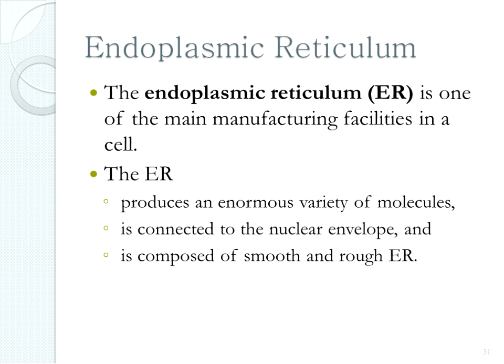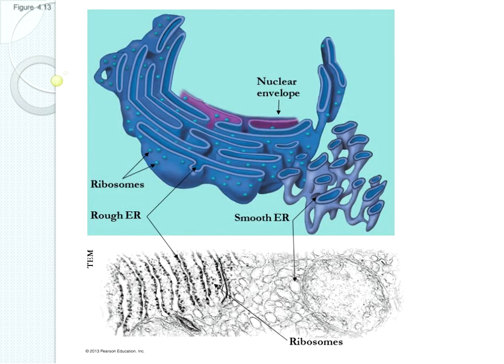The next organelle is the endoplasmic reticulum (ER). We can have rough ER or smooth ER. Rough ER has ribosomes on the outside — that's what makes it look rough — so rough ER synthesizes protein. Smooth ER synthesizes lipid. In the figure from your book, the rough ER has ribosomes on the outside, smooth ER looks more smooth, and a transmission electron micrograph shows how different these look under the microscope.